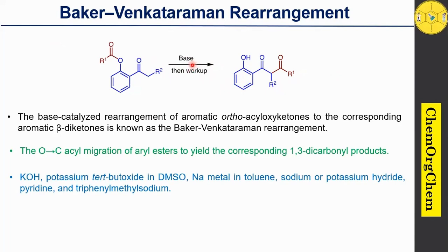In case of base, we can use a variety of bases — for example, potassium hydroxide, potassium tertiary butoxide in DMSO, sodium metal in toluene, sodium or potassium hydride, pyridine, and triphenylmethyl sodium. Those kinds of bases are highly useful for the generation of this class of compounds.